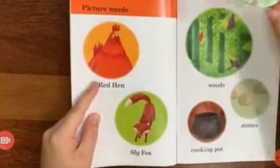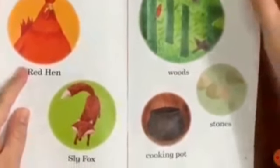So, how many words we learned today? Yes, there are five words that we learned today. The first one is red hen. Red hen. Sly fox. Sly fox. Woods. Woods. Cooking pot. Cooking pot. Stones. Stones.